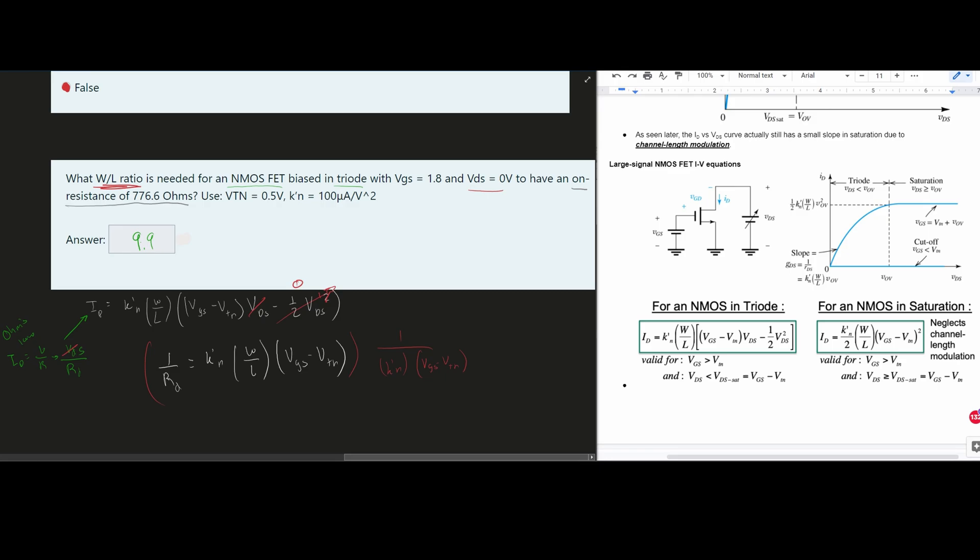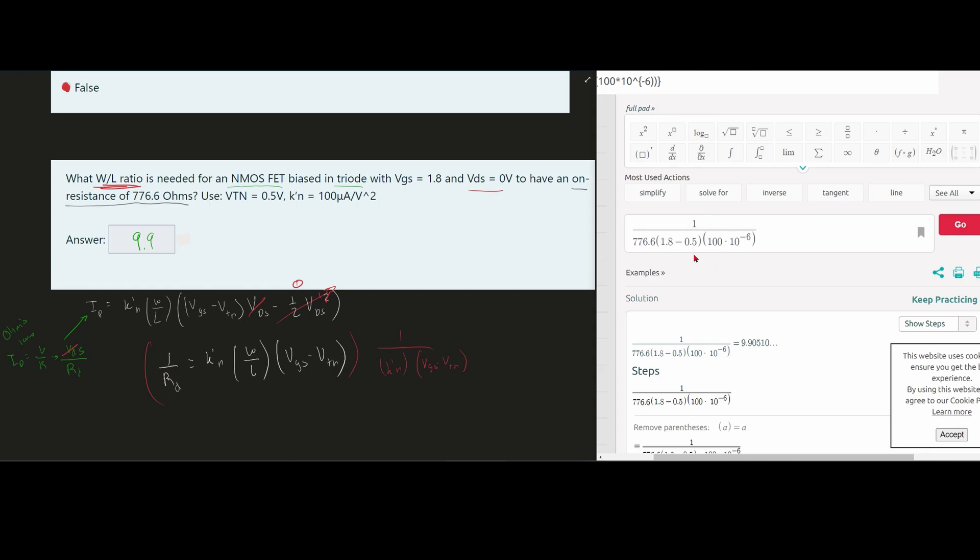And anything like it, the equations would just be very similar. So I believe I have a SymboLab here, we have one over the R_D, and then we have our VGS minus VTN, and then we have our K' N for this problem. And they give this about 9.9.